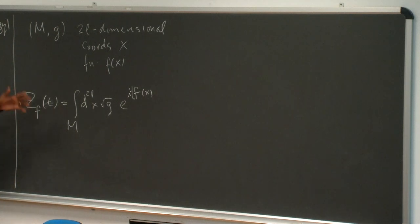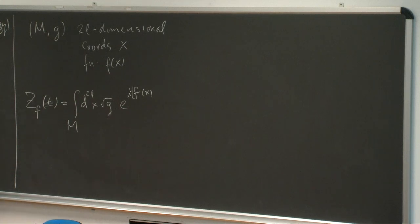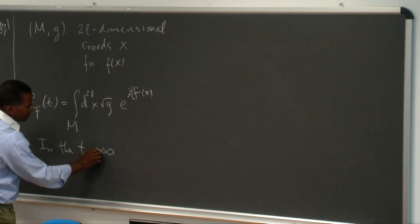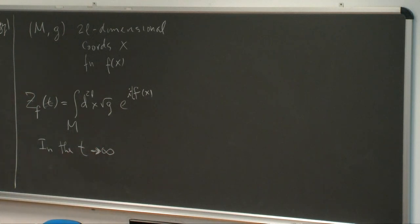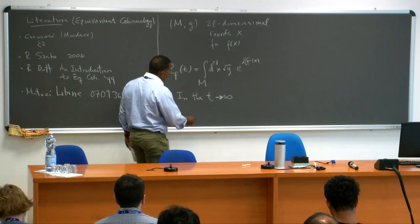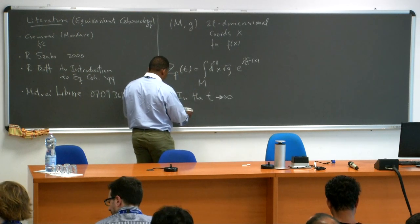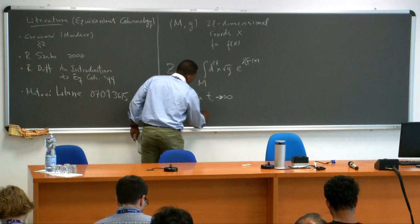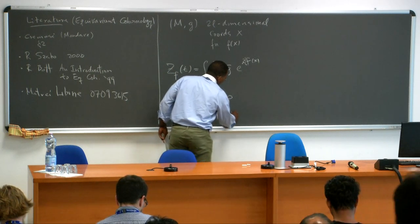This is the kind of integrals we all know and love — you can think of this as a finite-dimensional version of a path integral. What we understand even at the level of quantum mechanics is the following: in the t goes to infinity limit, the phase changes very rapidly, so you have some sort of interference, and the main contribution comes from the stationary points of the function f.